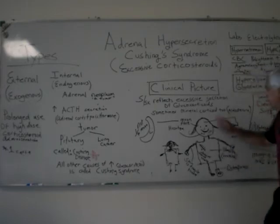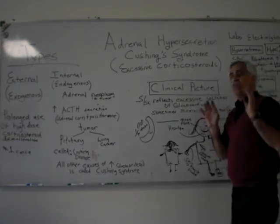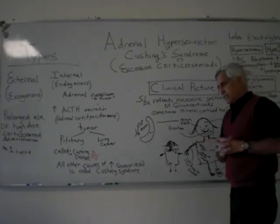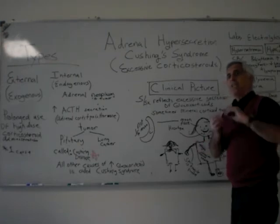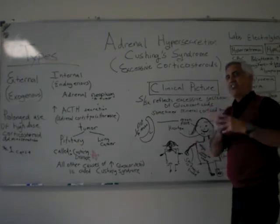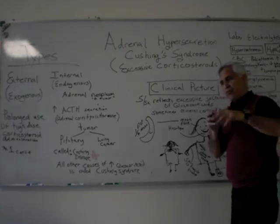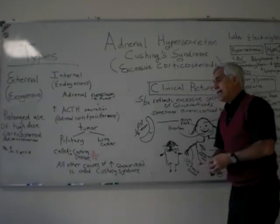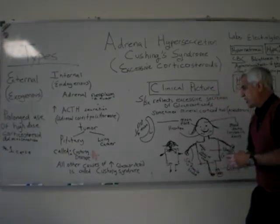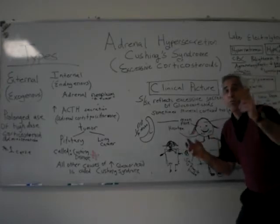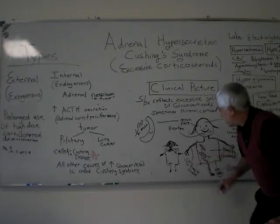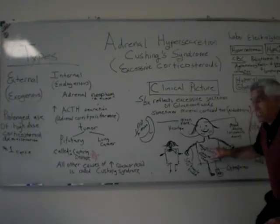Mood shifts, facial hair, moon face — hirsutism. Remember that excessive glucocorticoids secreted by the adrenal glands cause protein wasting. The matrix in the connective tissue goes down; there's a lack of collagen — collagen is connective tissue. The patient goes through a general state of protein breakdown. The skin will be very thin, very friable, easily bruised. They'll have delayed wound healing because of the protein wasting.